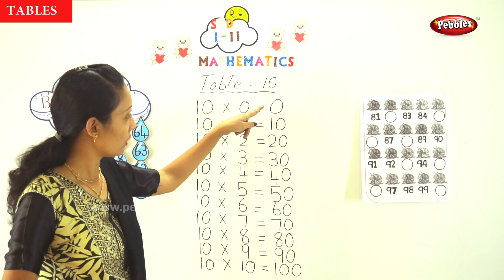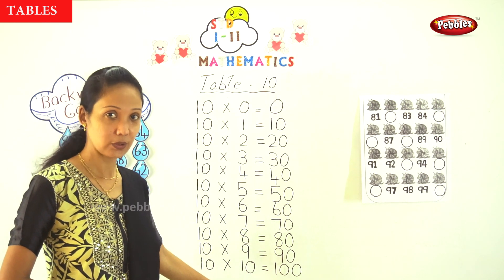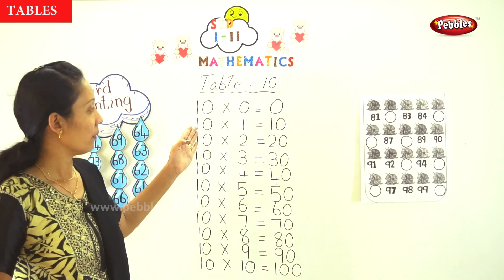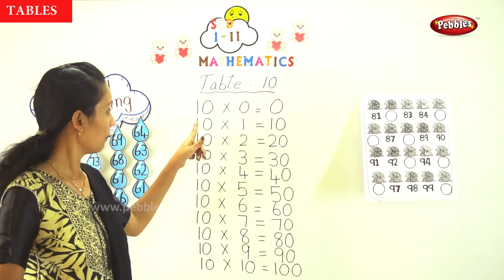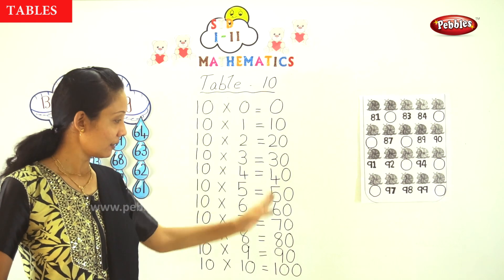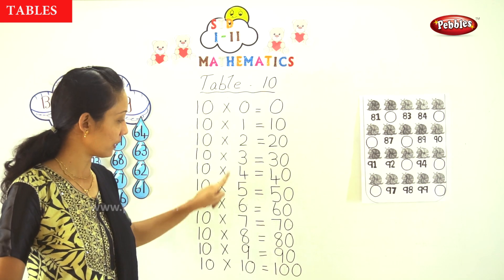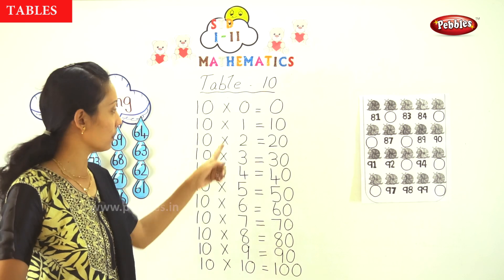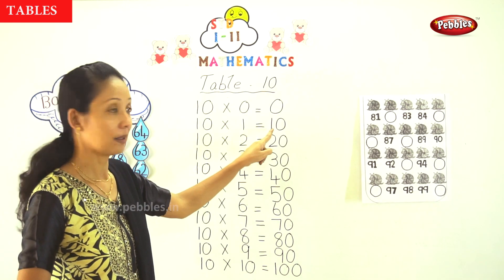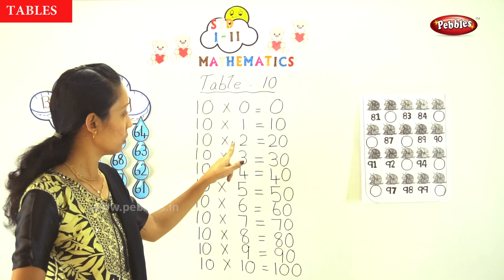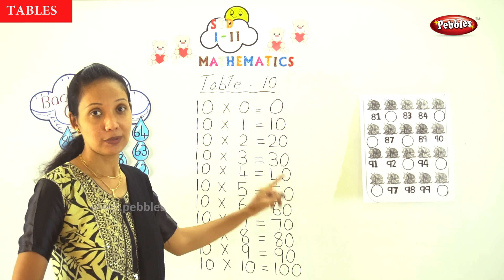This is easy. Over here you have 10, 20, 30, 40, 50, 60, 70, 80, 90, and 100. One easy way I am going to explain: the number which is in the middle — 1, 2, 3, up to 10 — you can just write that number and add a 0. So 1 and 0, 2 and 0, 3 and 0, 4 and 0. That is the easy method.